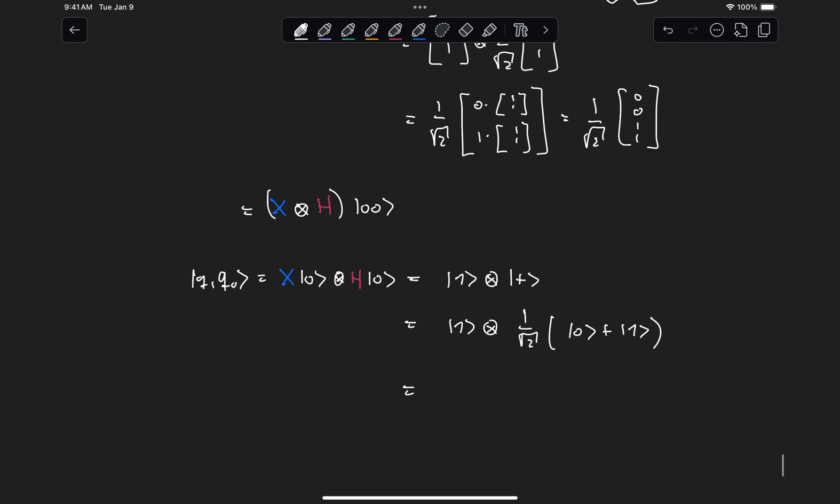Which is also equal to 1 over root 2. And then here we group inside the kets all of the qubits we have. So we distribute this one into the summation of our superposition state.